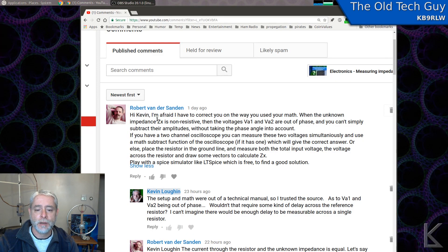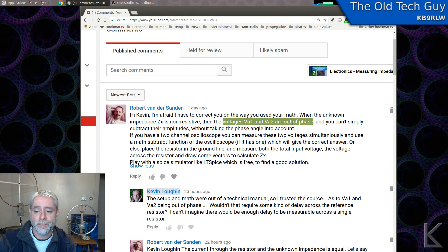Robert here commented that he wanted to correct me on the way I used my math. Now I'm not challenging Robert directly here. I'm really intrigued, honestly intrigued with the point that he makes. When the unknown impedance ZX is non-resistive, then the voltages are out of phase across the reference resistor, VA1, VA2, out of phase. And you can't simply subtract their amplitudes without taking phase angle into account.